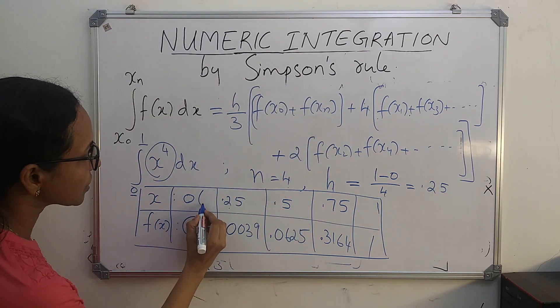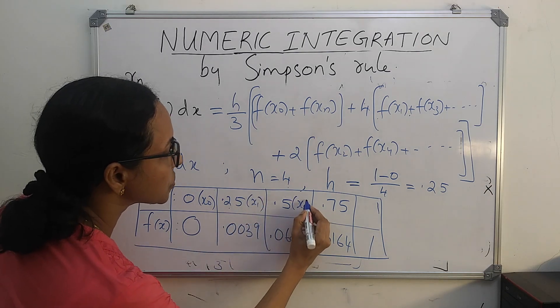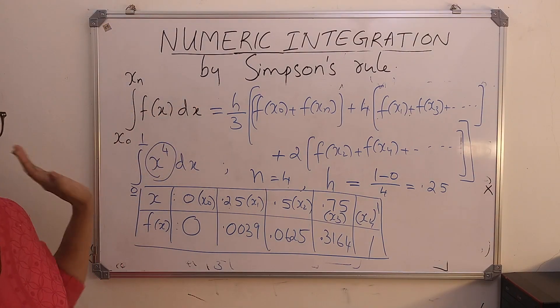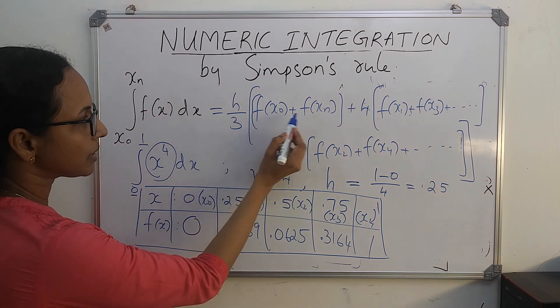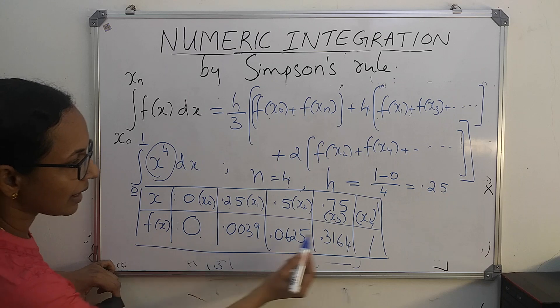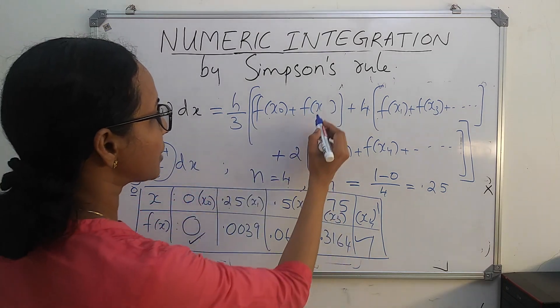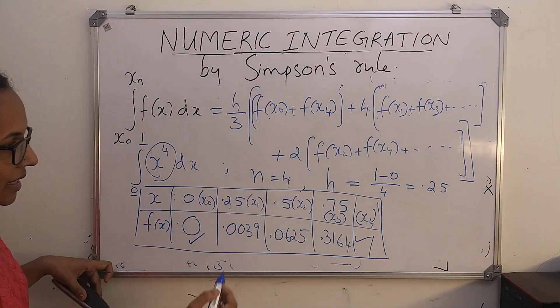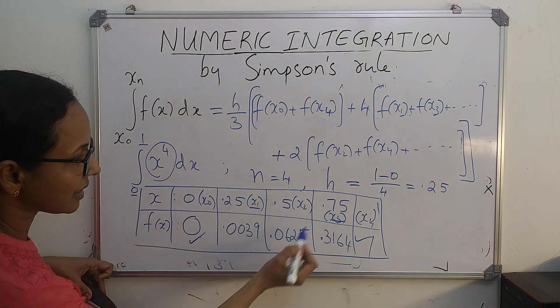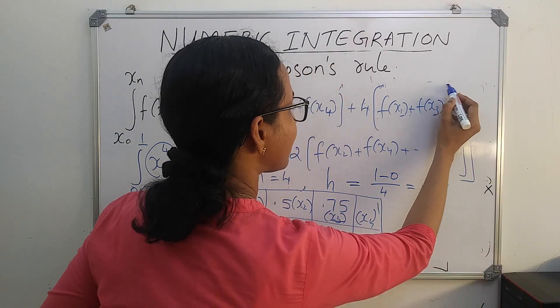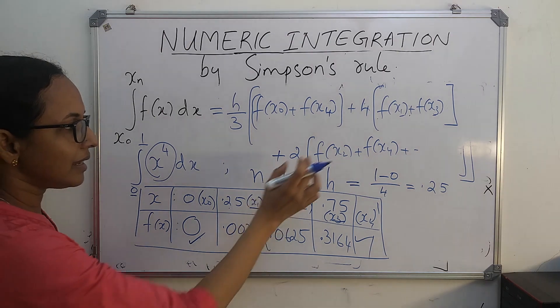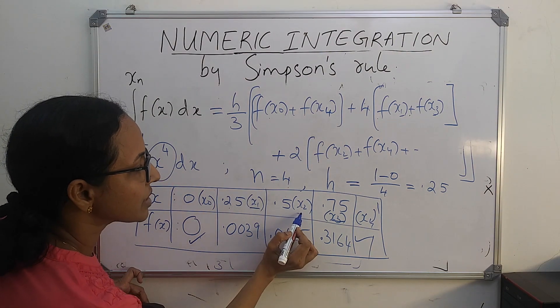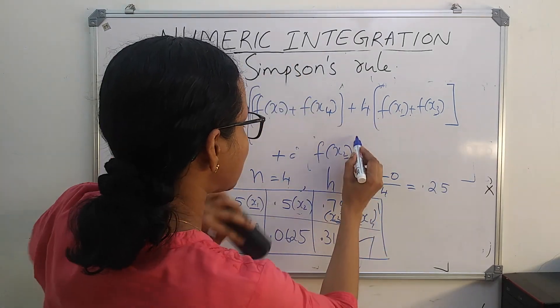This is x0, x1, x2, x3, and x4. Corresponding to these values, we write the formula: h by 3 into first term plus last term, f of x0 plus f of x4. Plus 4 into all odd suffix terms. In this case, odd suffix terms are x1 and x3, so f of x1 plus f of x3. Plus 2 into all even suffix terms. We have only one even suffix term, f of x2. So the formula is 2 into f of x2, then close the bracket.